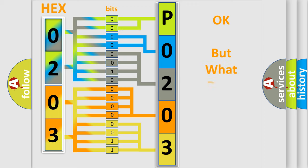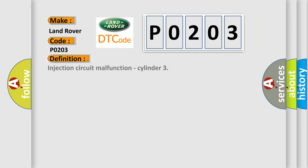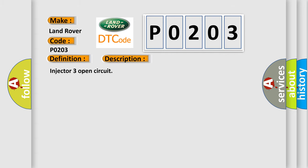We now know in what way the diagnostic tool translates received information into a more comprehensible format. The number itself does not make sense if we cannot assign information about what it actually expresses. So, what does the diagnostic trouble code P0203 interpret specifically for Land Rover car manufacturers? The basic definition is: Injection circuit malfunction, cylinder 3. And a short description of this DTC code: Injector 3 open circuit.